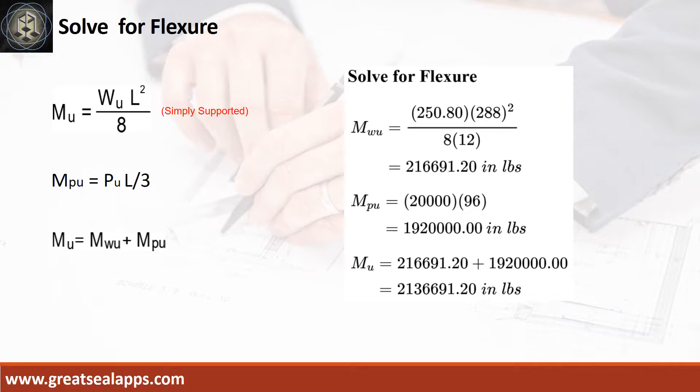The maximum moment from uniform load is 216,691.2 inch-pounds. The maximum moment from concentrated load is 1,920,000 inch-pounds for a total maximum design moment of 2,136,691.2 inch-pounds.